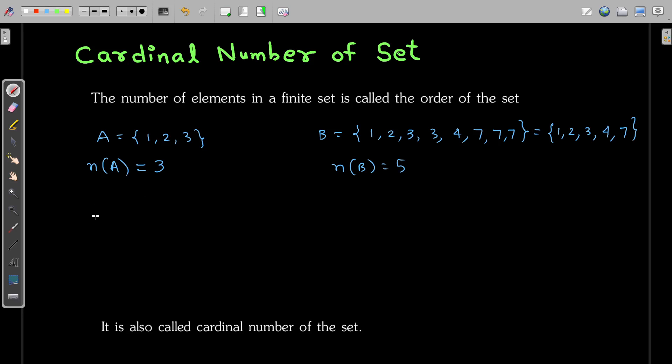Now, if you remember this singleton set, singleton set contains always 1 element. So the cardinal number of singleton set is always 1. You can say that cardinal number of singleton set is always 1. This is something that you should keep in mind.